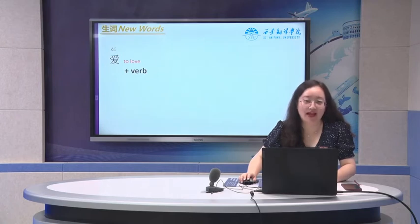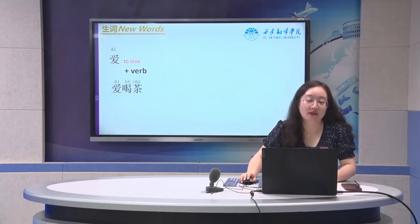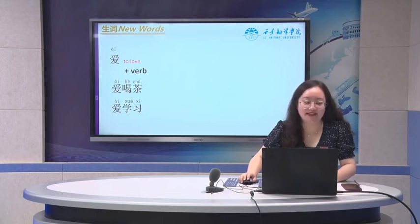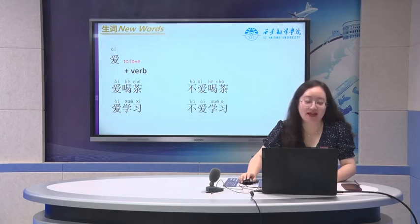爱 means to love. We can always put a word after it. We can say 爱喝茶, 爱学习. The negative form is 不爱喝茶, 不爱学习.